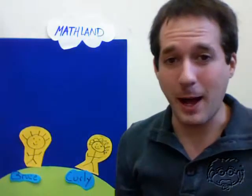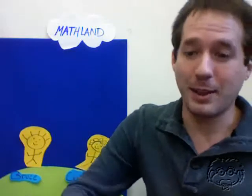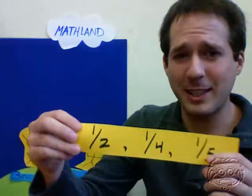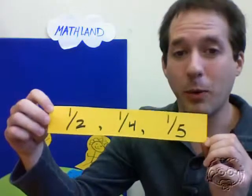Hey guys, this lesson is all about lowest common denominators. I'm here with Bruce and Curly, and we're going to find lowest common denominators for a couple fractions. Check these fractions out: 1 half, 1 fourth, and 1 fifth.